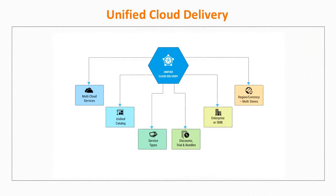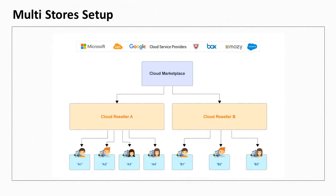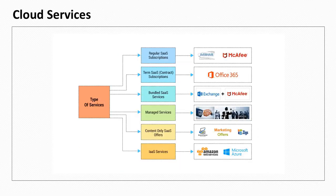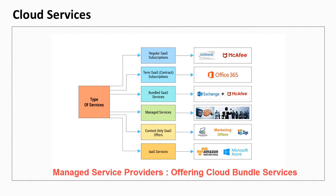MSPs can set up multiple web stores based on different regions or currencies to offer a unified catalog with multi-cloud services to enterprises and SMBs. Service providers can offer SaaS or IaaS services, or term-based services with specific start and end dates that can be renewed automatically or manually at the end of the period.